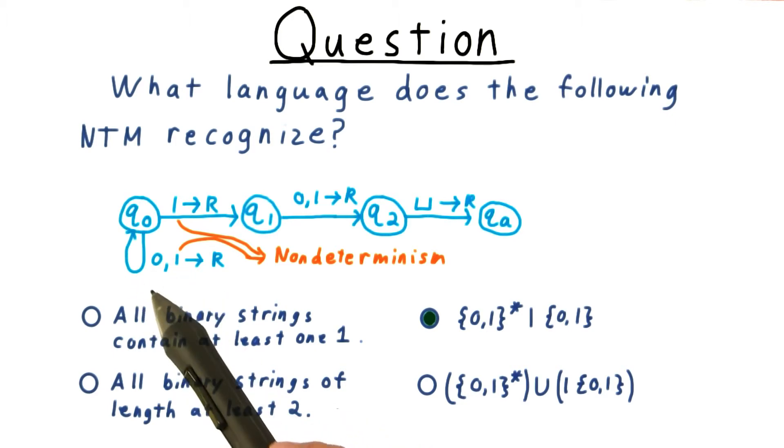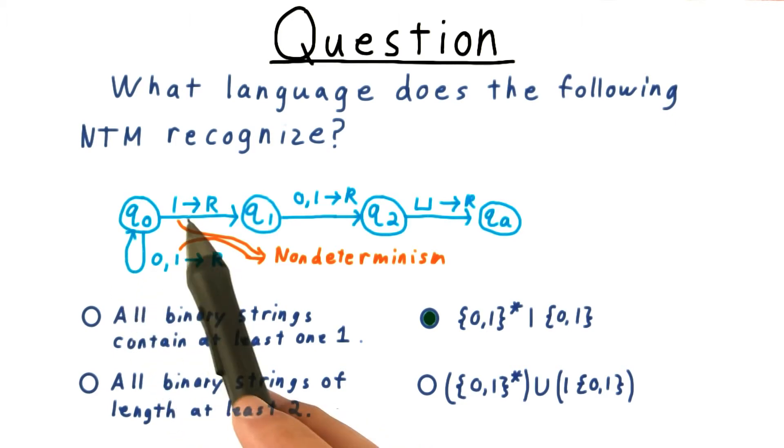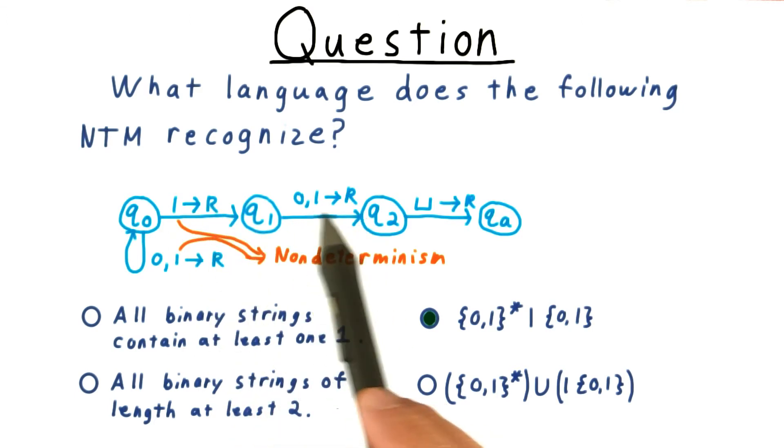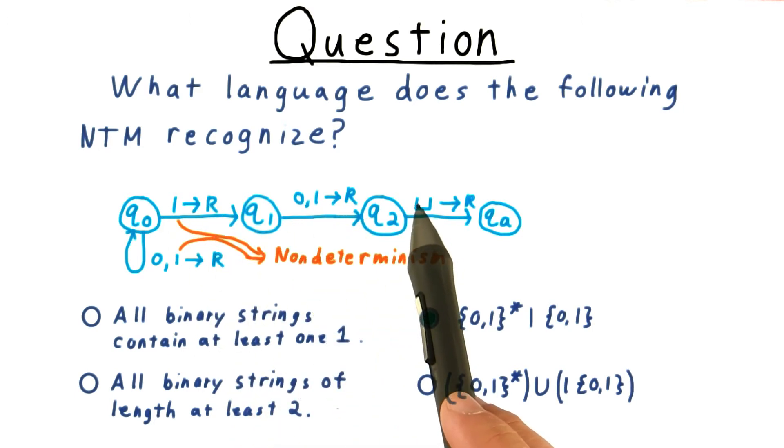In any accepting computation, however, it has to stop exactly two symbols before the end, so that a 1 and then either a 0 or a 1 can be read just before the end of the input is reached.